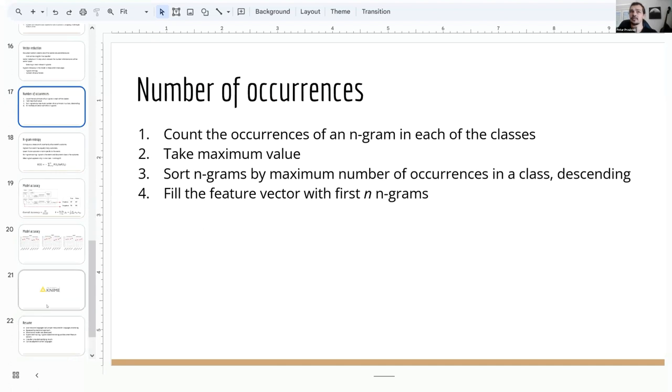Scoring the n-gram relevancy by number of occurrences is simply performed by counting the number of occurrences of an n-gram in each of the classes and taking the maximum value. N-grams are then sorted by the maximum number of occurrences in the class in descending order, and first n are included in the feature vector.